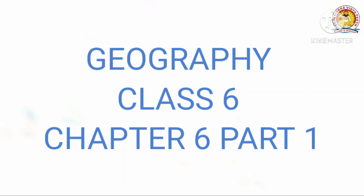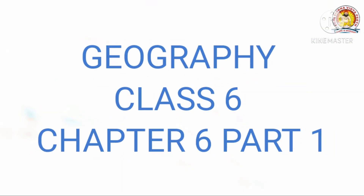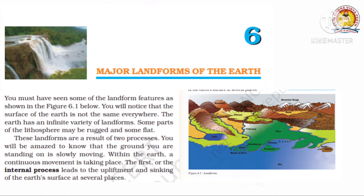Welcome students. This is your Geography Class 6, Chapter 6, and your chapter name is Major Landforms of the Earth. You must have seen some of the landform features as shown in figure 6.1. You will notice that the surface of the earth is not the same everywhere. The earth has an infinite variety of landforms. Some parts of the lithosphere may be rugged and some flat. These landforms are a result of two processes.